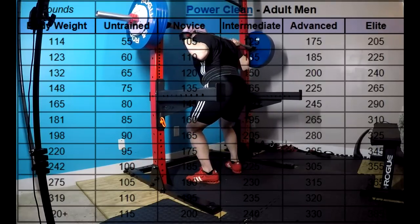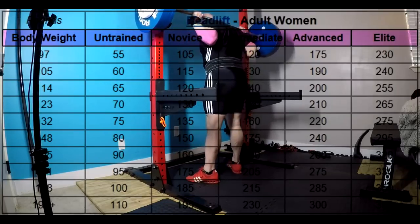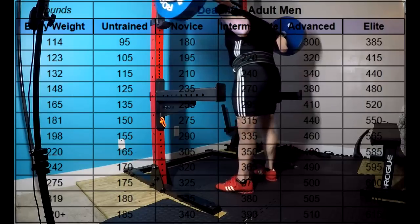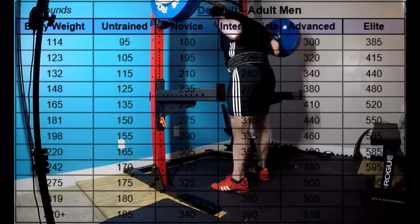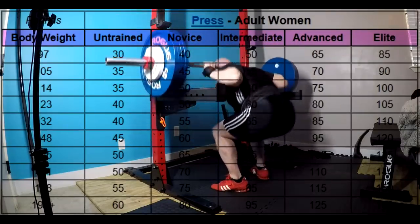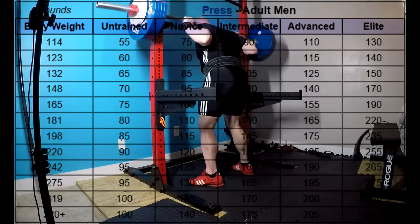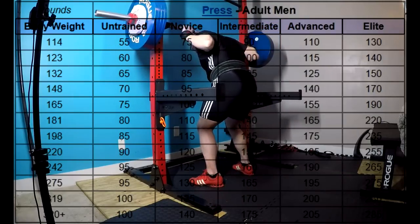So why do these ratios favor certain people? Very simply put, the shorter you are, the easier it's going to be for you to hit a certain multiplier. In other words, if you are 5'4 or 5'5, you might actually reach a double bodyweight bench completely drug-free. And you might do it in 3 to 5 years.